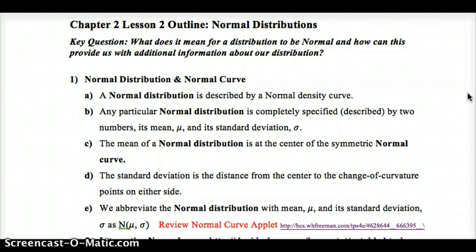The mean of a normal distribution is at the center of the symmetrical normal curve. So since it's symmetric, the median and mean are equal. There's no skew, so the mean is not getting pulled right or left by the tail. The standard deviation is the distance from the center to the change of curvature points on either side. Let's take a look at what that looks like.